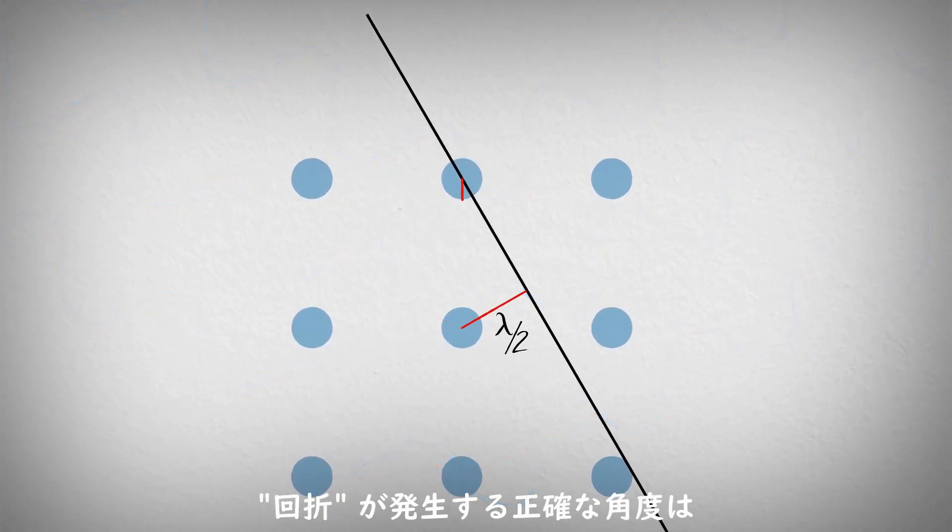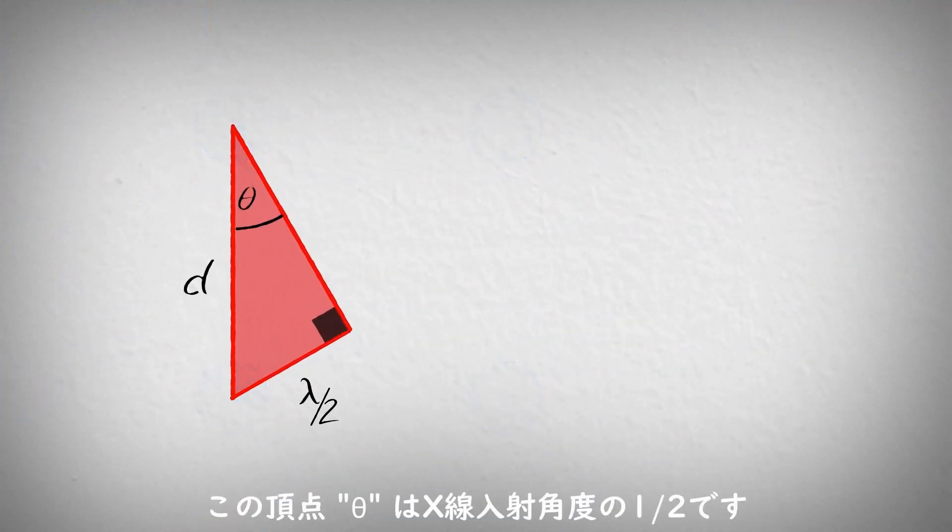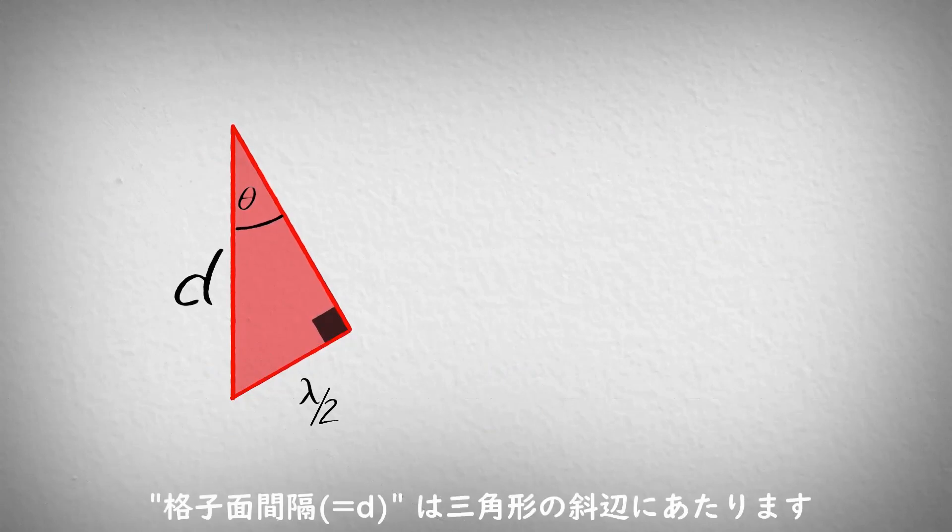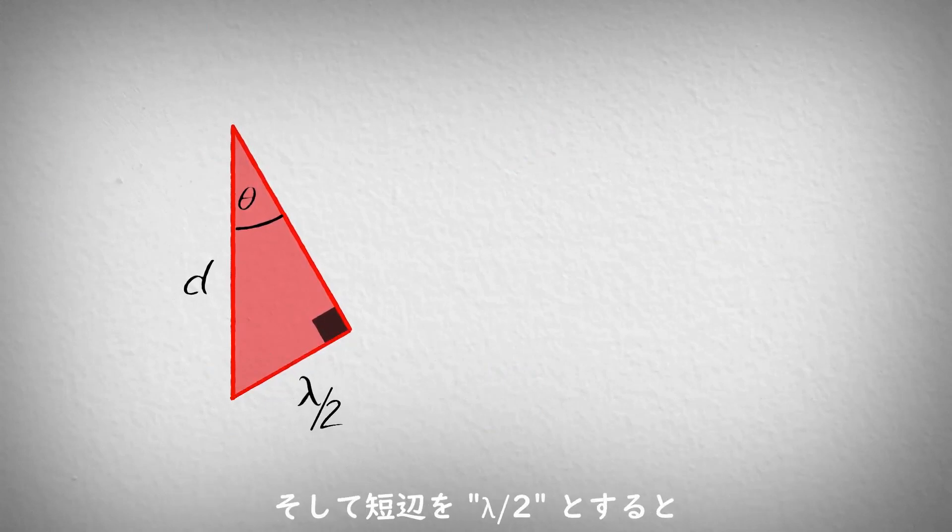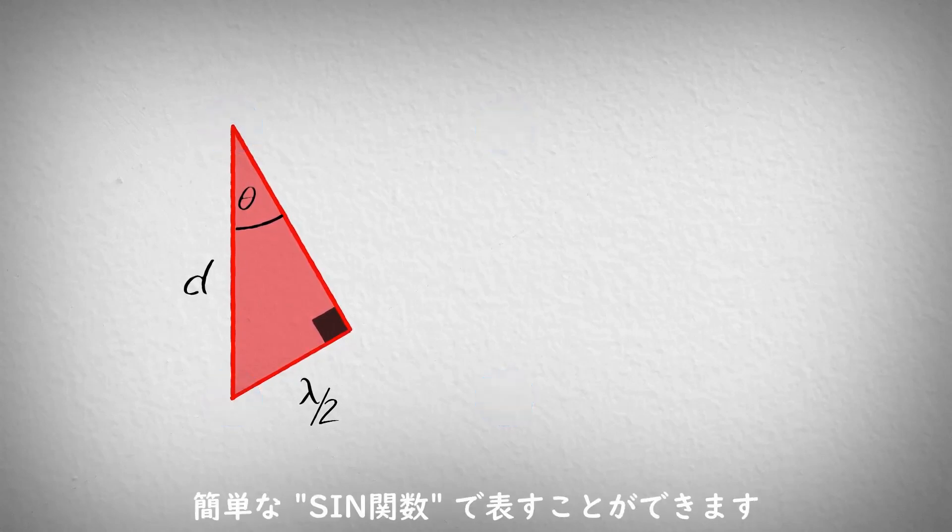The exact angle at which diffraction occurs can be determined from the red triangle. The angle at the top is theta, half the angle between the incident and scattered beams. The long side is the distance between the atomic planes, and the short side we know is one half of a wavelength. The relationship between the diffraction angle and the spacing between the atoms can be determined by applying the sine function.